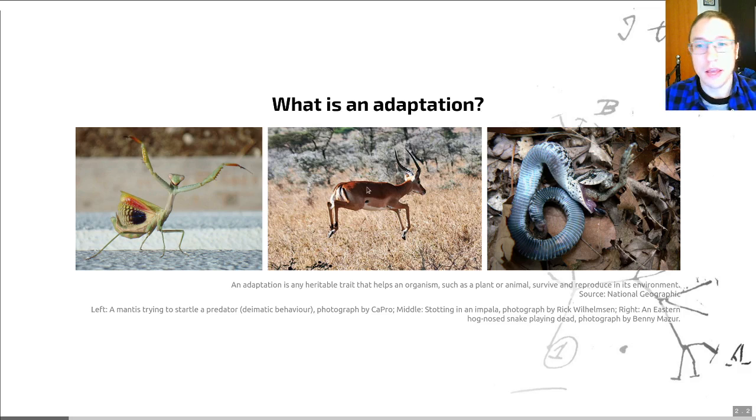In the middle here you can see an impala engaging in a behavior called stotting. This is jumping high with stiff legs and an arched back, and it shows the high level of fitness of this individual and tells predators that individual is likely to be able to outrun the predator. So it's a tactic to make predators less likely to try and chase this impala.